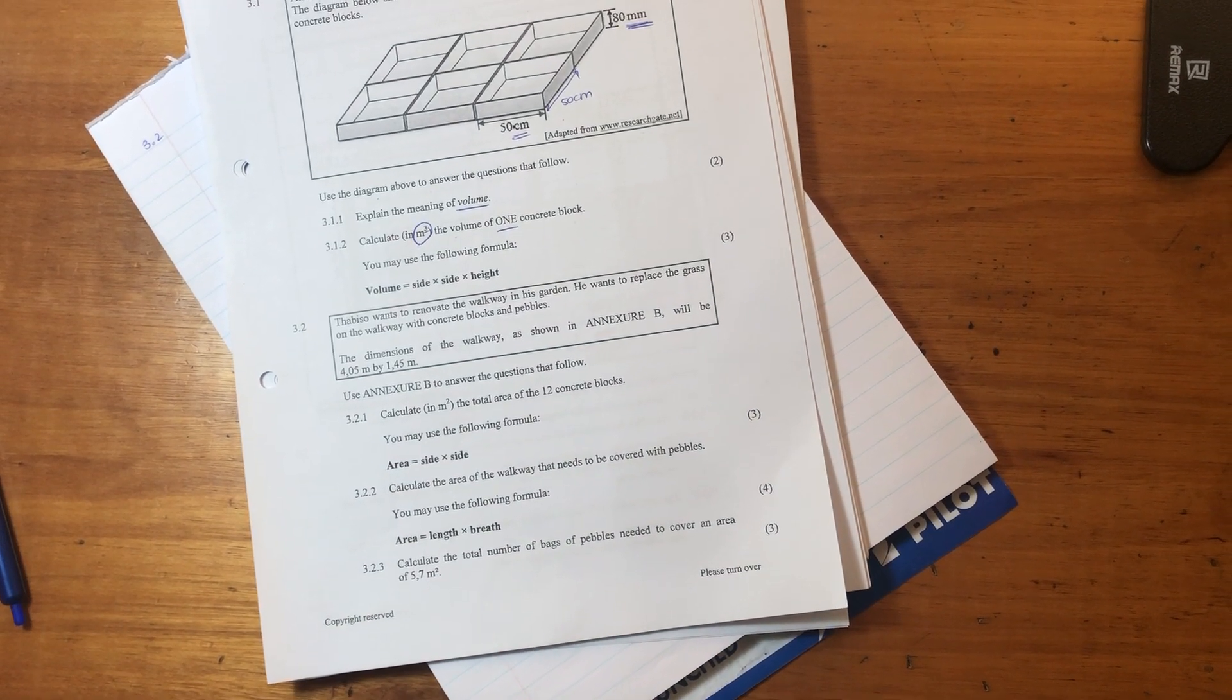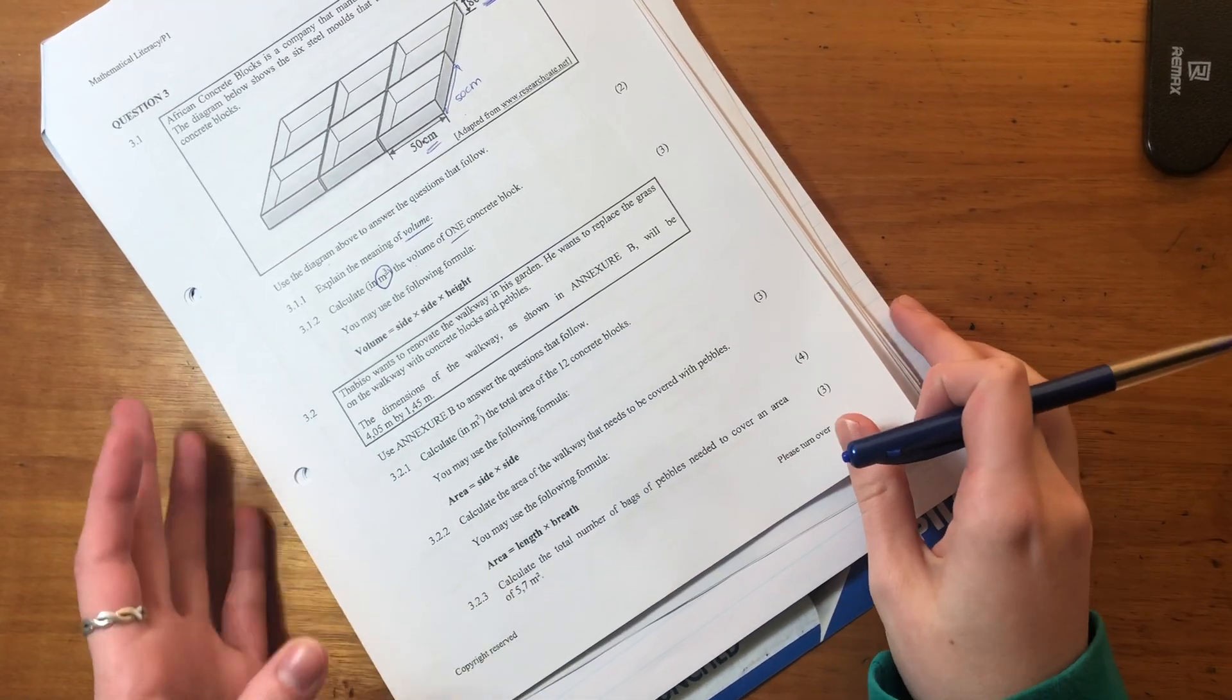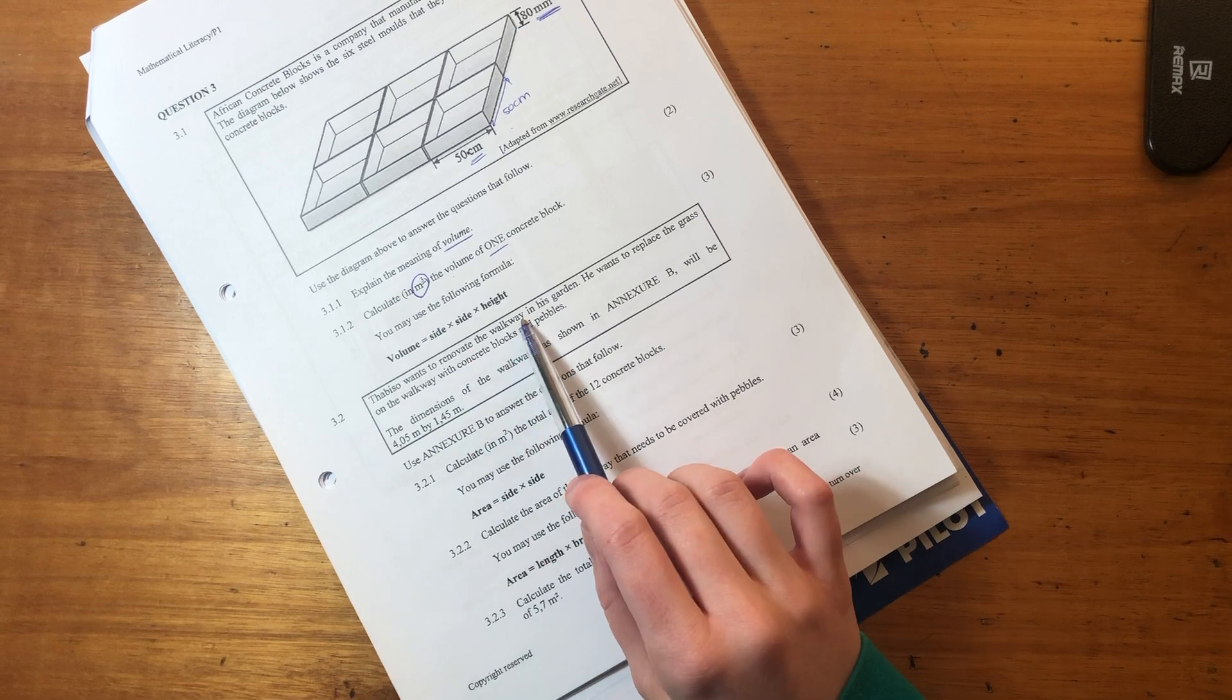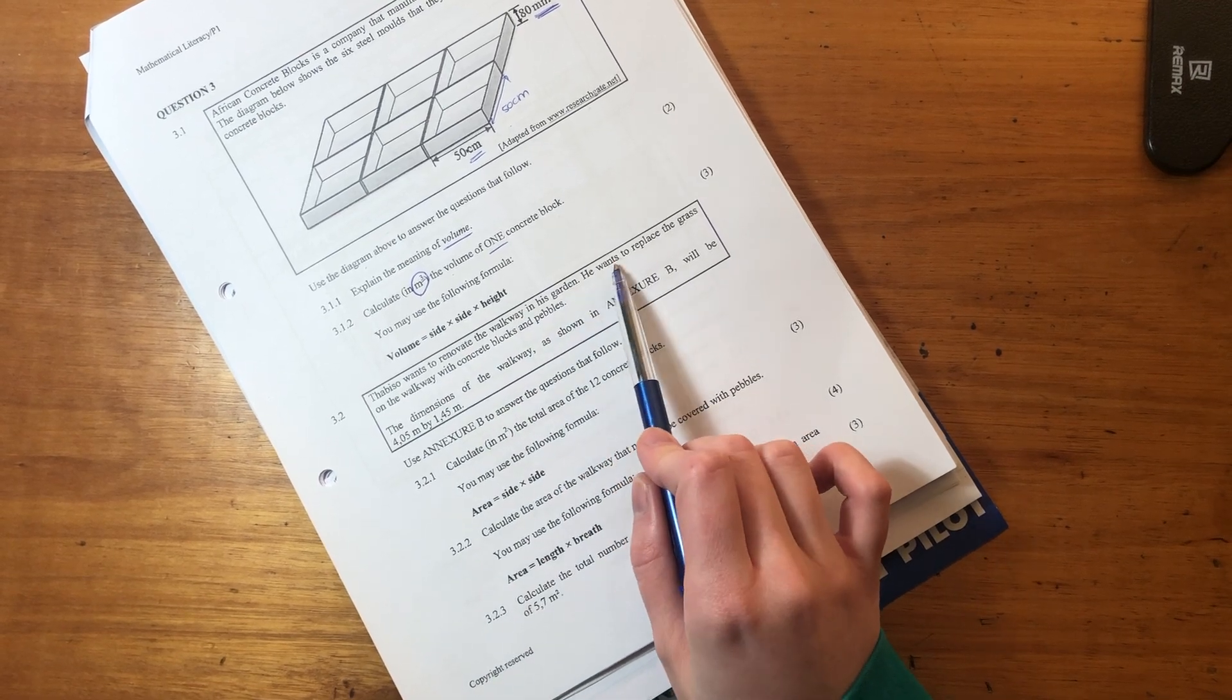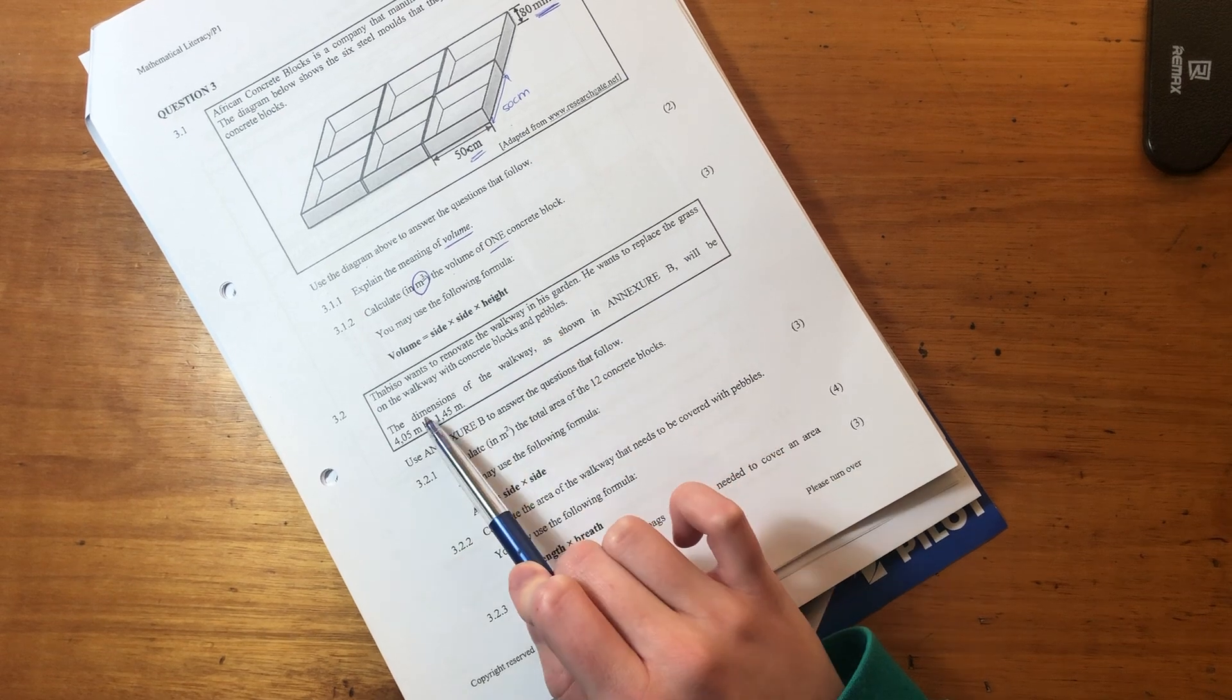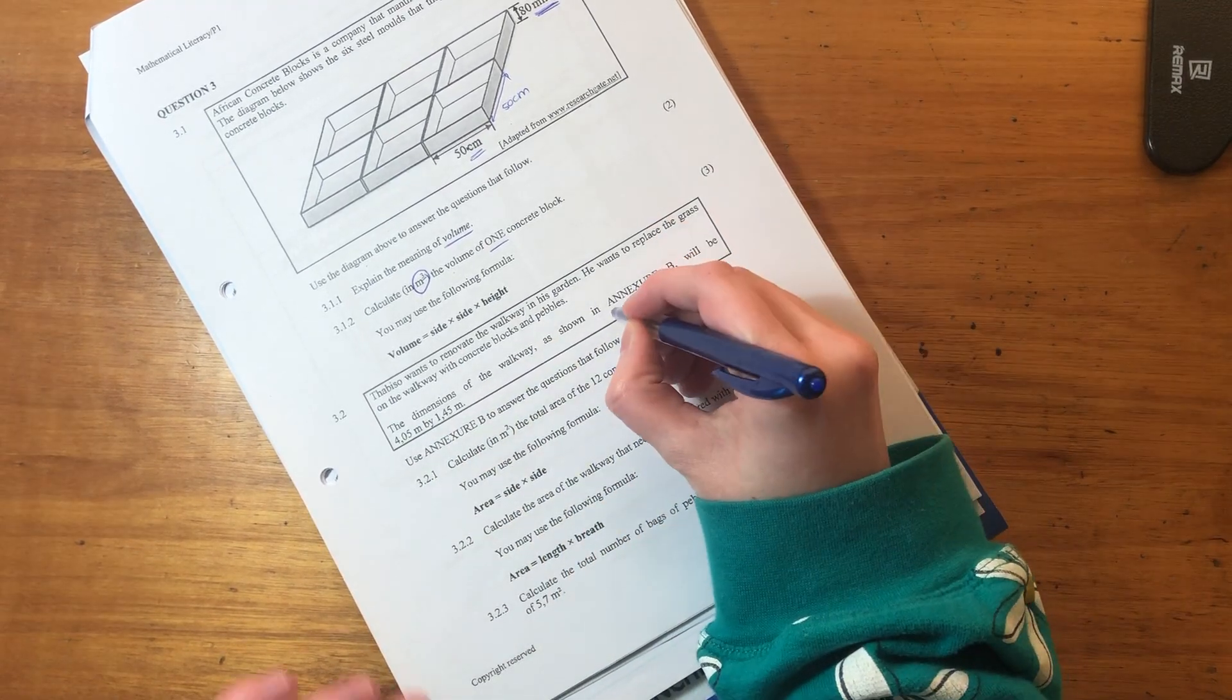Hello everyone. We're moving on to question 3.2. Question 3.2 says Tabisul wants to renovate the walkway in his garden. He wants to replace the grass on the walkway with concrete blocks and pebbles. The dimensions of the walkway are shown in annexure B.